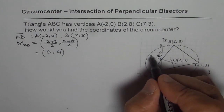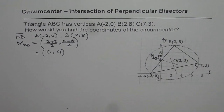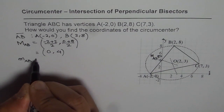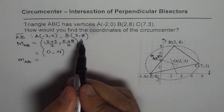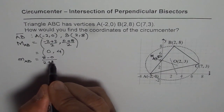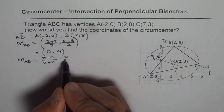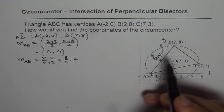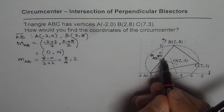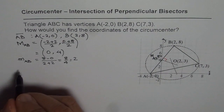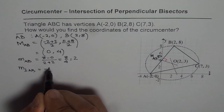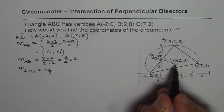Now let's find the slope of line AB. Slope m(AB) = (Y2 − Y1) / (X2 − X1). The y-values are 8 and 0, and the x-values are 2 and −2, so it's (8 − 0) / (2 − (−2)) = 8/4 = 2. The slope of AB is 2. The slope of the perpendicular bisector must be the negative reciprocal, which is −1/2.